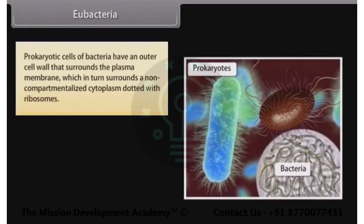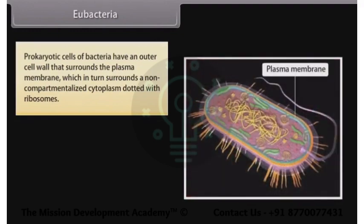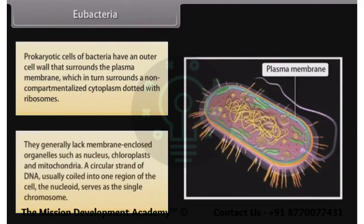Prokaryotic cells of bacteria have an outer cell wall that surrounds the plasma membrane, which in turn surrounds a non-compartmentalized cytoplasm dotted with ribosomes. They generally lack membrane-enclosed organelles such as nucleus, chloroplasts, and mitochondria. A circular strand of DNA, usually coiled into one region of the cell called the nucleoid, serves as the single chromosome.